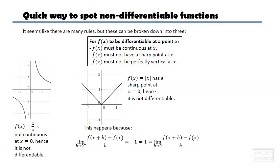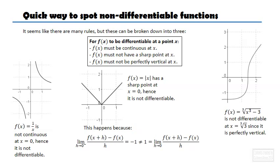And finally, the last case that you have to keep in mind must not be perfectly vertical at x. Exactly the same case as I showed you before. Cubic root of x cubed minus 3. Not differentiable at x equals cubic root of 3 because it is perfectly vertical.